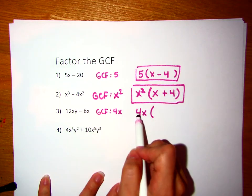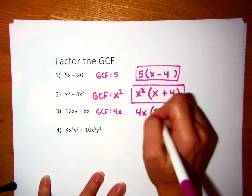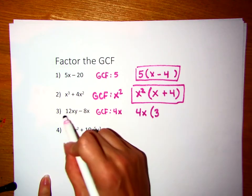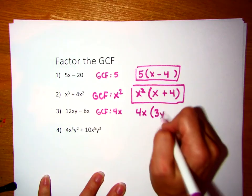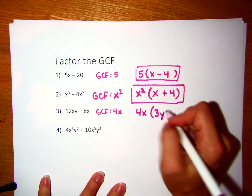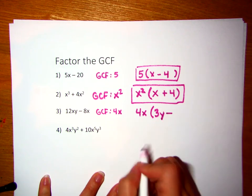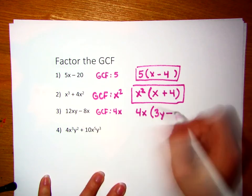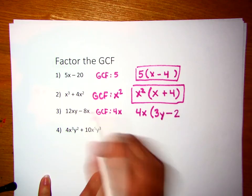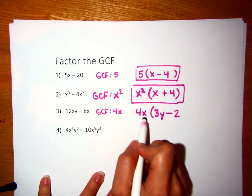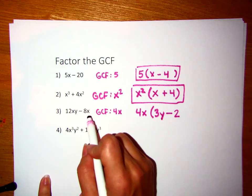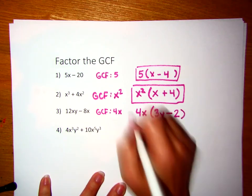4 times what gives me 12? 3. Notice I already have an x represented, so I don't need it. What is this term still missing? A y. So 4x times 3y will give me 12xy. Then we bring our subtraction sign in. 4 times what gives me 8? 4 times 2. Notice they both have an x, so we have the x represented. Does 4x times negative 2 give me negative 8x? Yes. That would be our final answer.